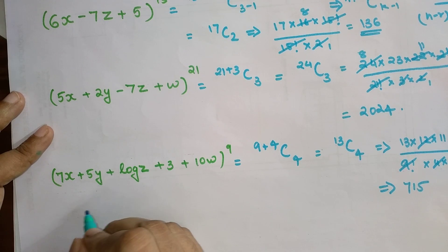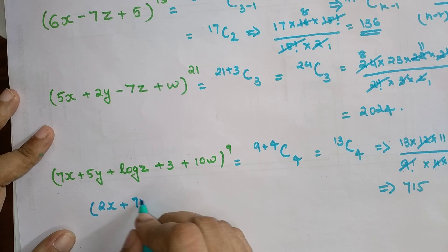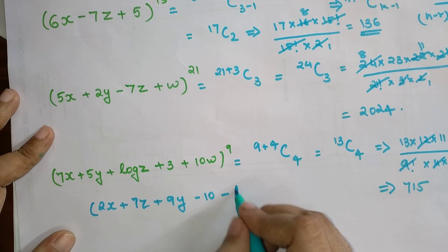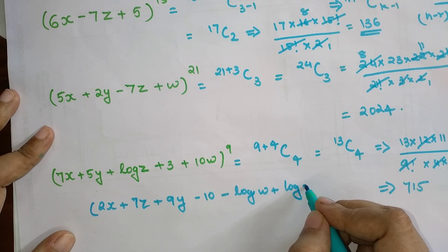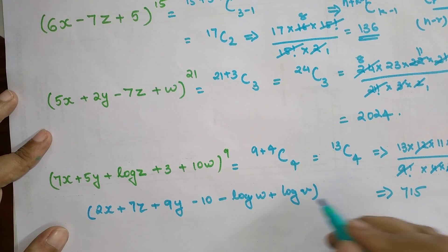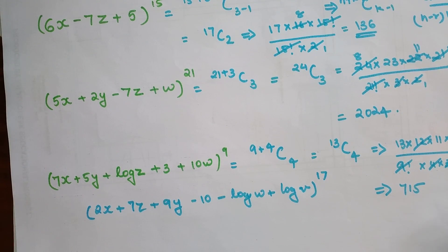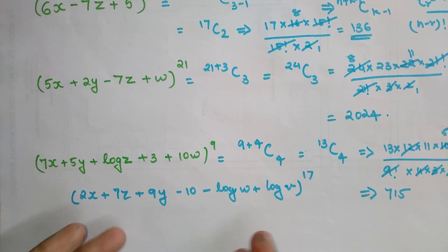Coming back, now you will tell me what is the number of terms in (2x + 7z + 9y - 10 - log w + log v) raised to 17. Please go ahead and mention the answers of this particular question in the comment section.